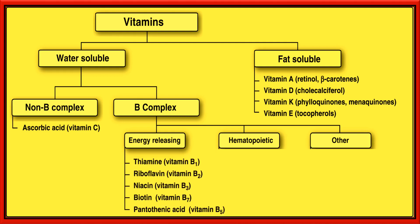Among the energy-releasing vitamins are thiamine (vitamin B1), riboflavin (vitamin B2), niacin (vitamin B3), biotin (vitamin B7), and pantothenic acid (vitamin B5). These are the vitamins involved in energy-releasing processes or metabolism in the body.